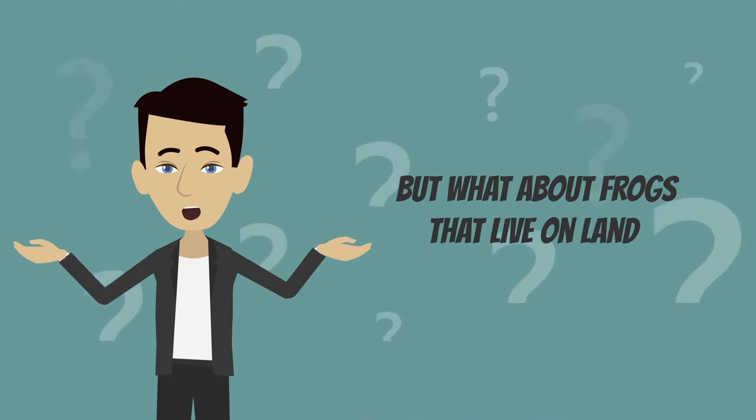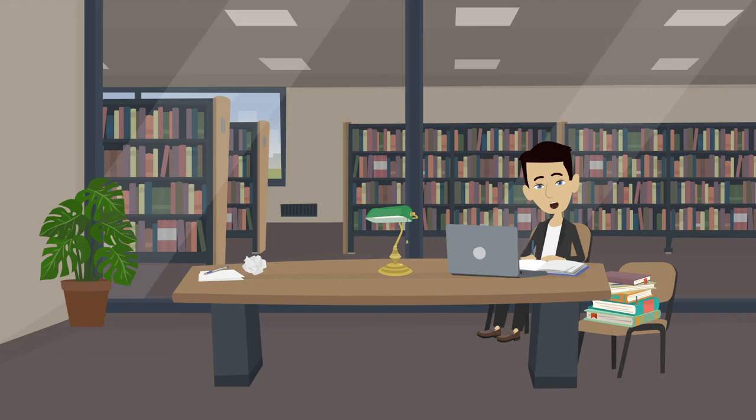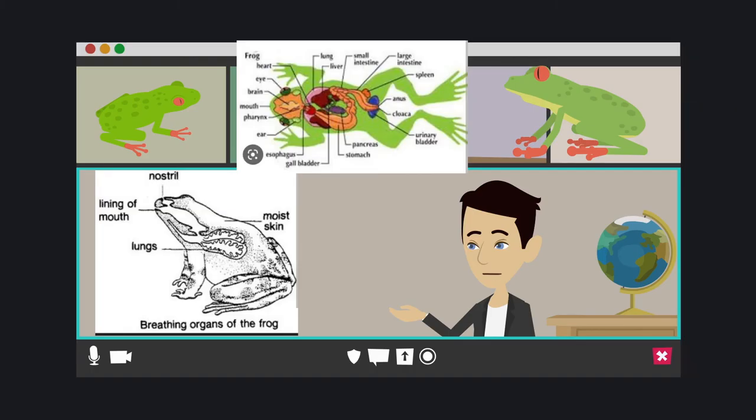But what about frogs that live on land? They still have the ability to breathe through their skin, but they also have lungs that they use to breathe air. The lungs of a frog are relatively small, but they are very efficient.